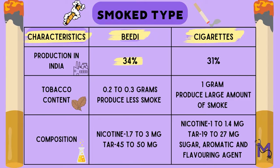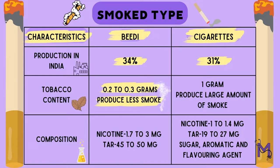BD accounts for 34% of tobacco production in India, while cigarettes account for 31% of the total production. The tobacco content in BD is only 0.2–0.3 grams, causing less smoke to be produced, while cigarettes produce a large amount of smoke due to the presence of 1 gram of tobacco content.